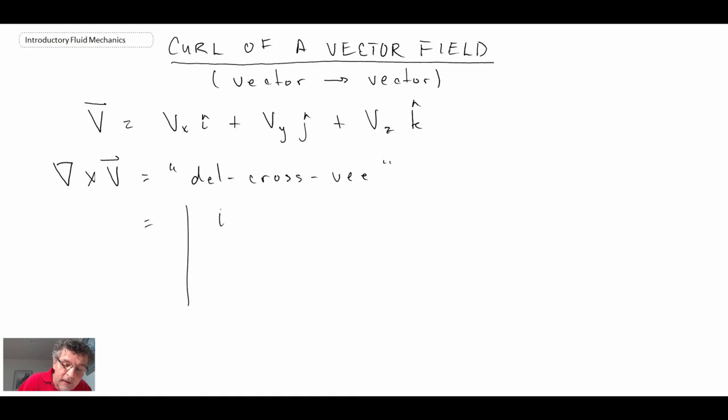And that would be equal to, we use the determinant, i, j, k, partial partial x, partial partial y, partial partial z, and then we would have vx, vy, vz, and then you evaluate the determinant. And we're going to get a vector coming out of this.